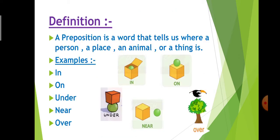Definition. What is preposition? A preposition is a word that tells us where a person, a place, an animal or a thing is. You can see the word preposition is telling you position. So you can understand very easily that preposition is telling us position. The words which tell us the position of a person, a place, an animal or a thing are called preposition. For example: in, on, under, near, over. These are the examples of preposition.